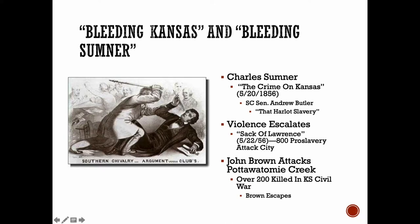The violence in Kansas escalated. 800 pro-slavery people attacked Lawrence, Kansas. And on the banks of the Potawatomi Creek in Kansas, John Brown — a New England abolitionist and kind of a millennialist, kind of an eccentric — attacked and killed people. This led to more and more violence throughout this civil war that was happening in Kansas, though John Brown escaped.